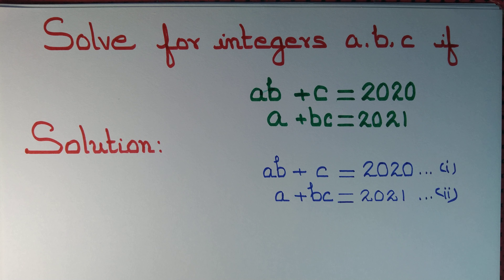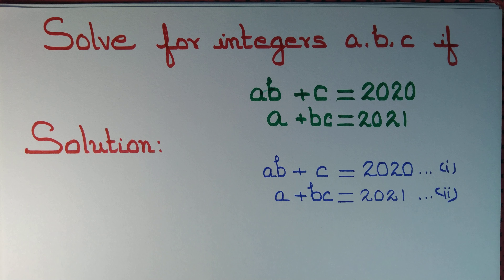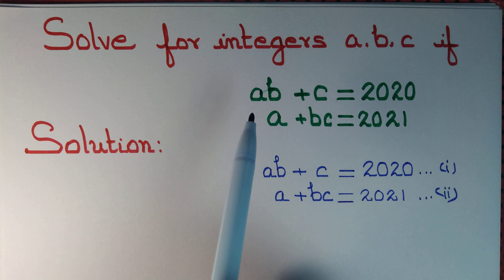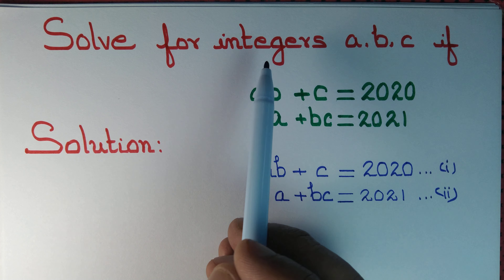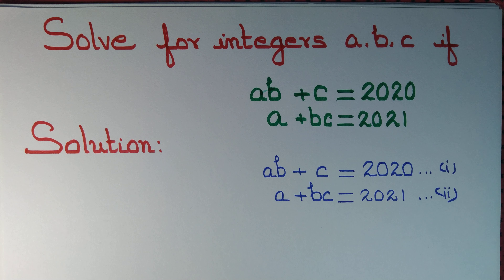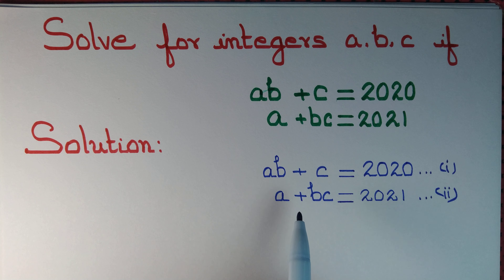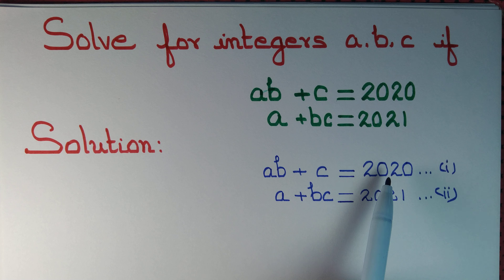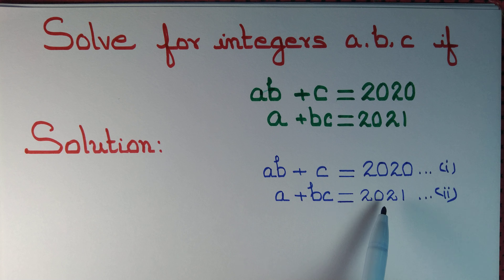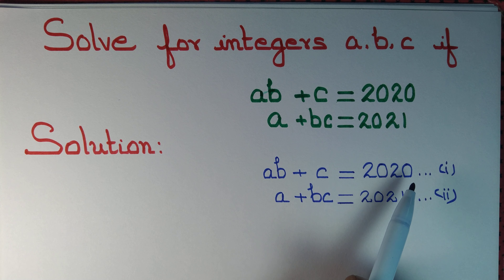We are given two equations and three unknowns a, b, c. We might expect infinitely many solutions, but that's not the case here because we are looking for integer solutions. Every non-zero integer has a finite number of factors. We also observe that 2020 and 2021 differ by just one, so let's subtract equation 2 from equation 1.